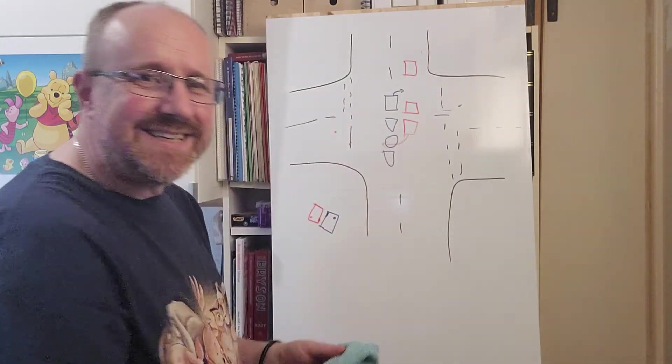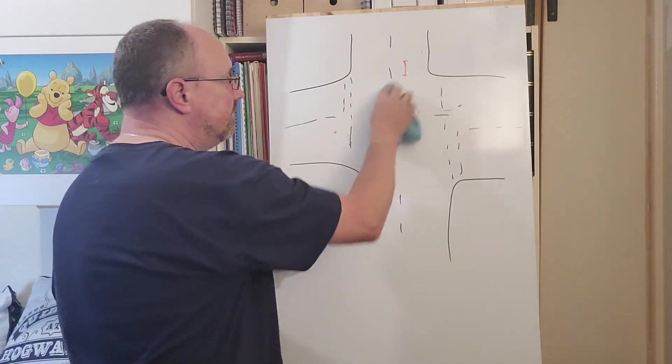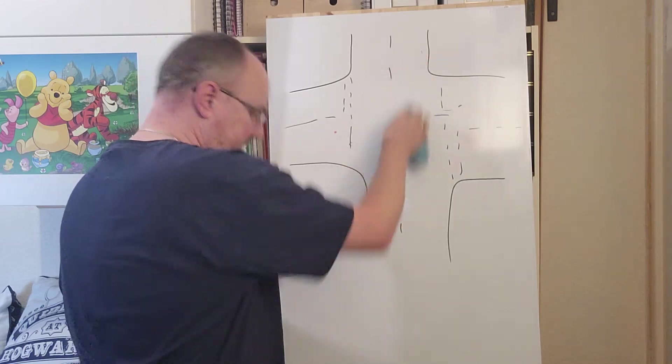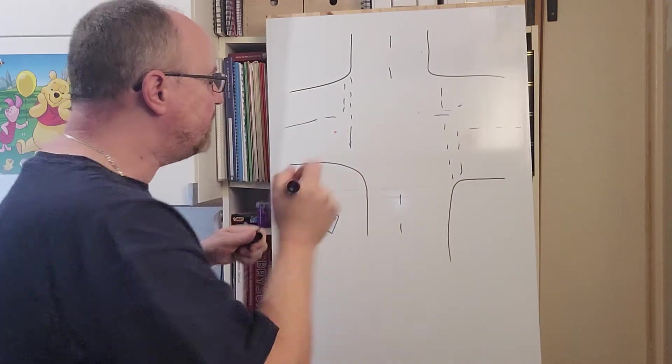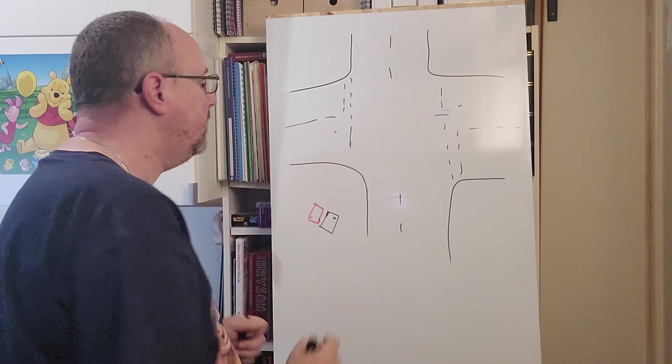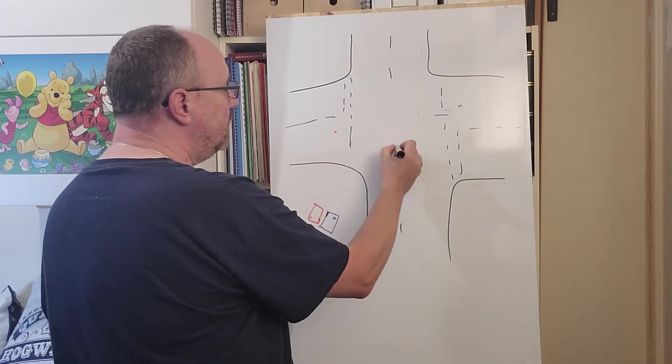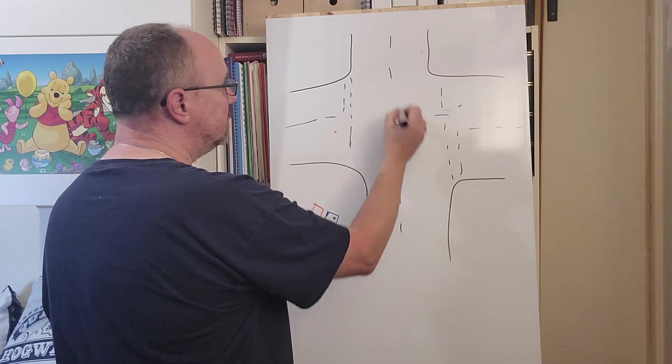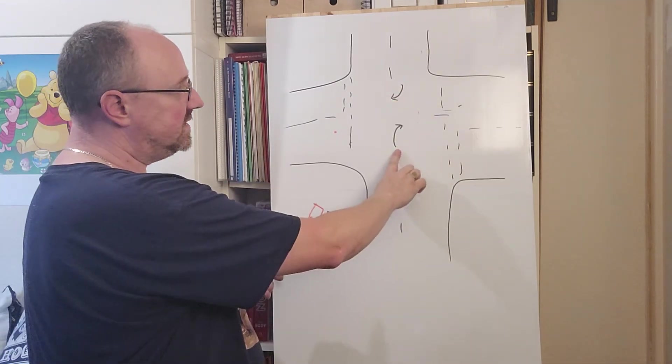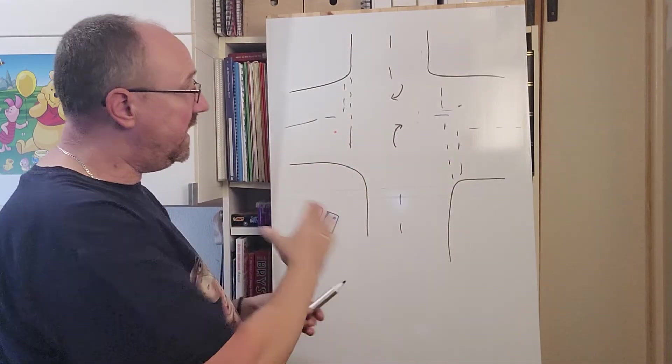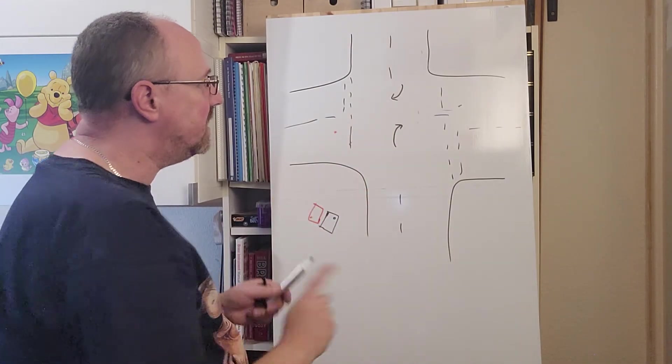Now when we decide which method to use, a few things to think about. First of all, are there any road markings to tell you which way to do it? You might have some arrows in the road to tell you that you're going to stop short of this car. So that would be passenger side to passenger side.